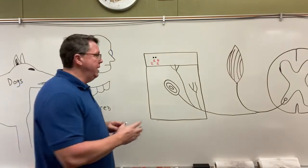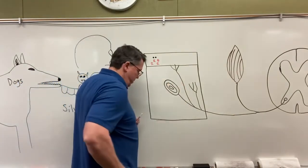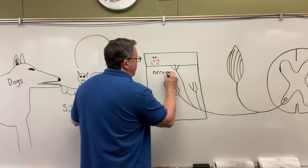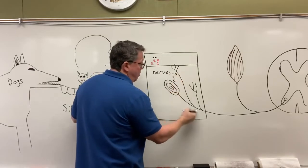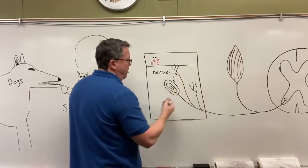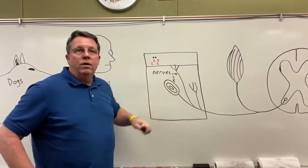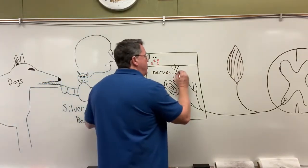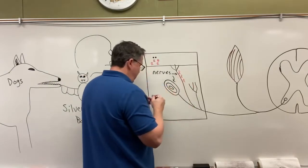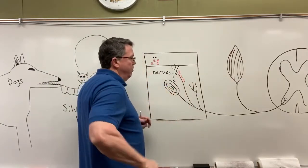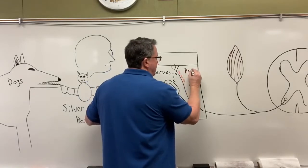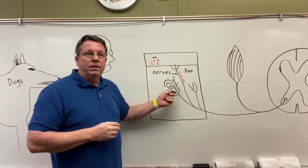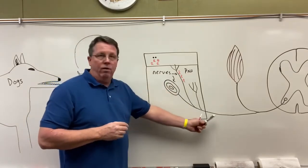In the skin we have nerves — receptors for touch and pressure. Rabies will go into these nerves, which are part of the peripheral nervous system, or PNS. It can also multiply inside the peripheral nervous system and will start making its way down the nerve toward the spinal cord.